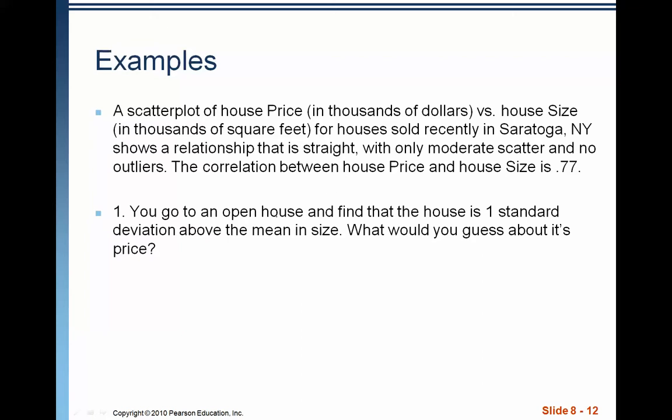I go to an open house and I find that the house is one standard deviation above the mean in size. What would I guess about its price? Now, remember, this is size and price. And since I'm going one standard deviation to the right in size, that means I'm going R standard deviations up in price.